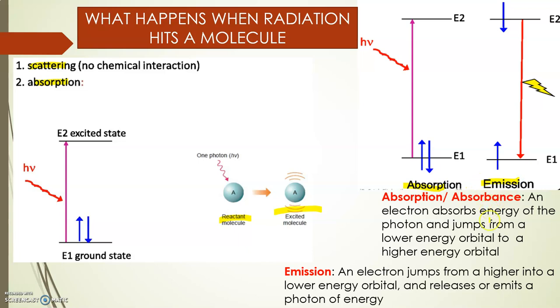What is absorption? When electrons absorb energy of a photon and jump to a higher energy level from a lower energy level, as you can see from E1 to E2. And what is emission? When an electron in a higher energy level jumps to a lower energy level emitting a photon, that is known as emission.